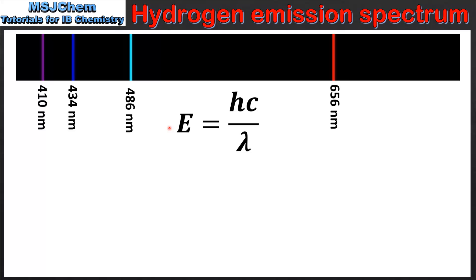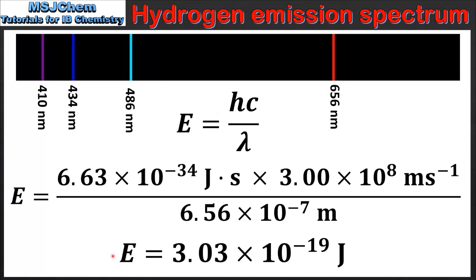Here we look at how to calculate the energy of the photon emitted for each electron transition. To do so we can use this equation: energy is equal to Planck's constant multiplied by the speed of light divided by the wavelength. This gives us a value of 3.03 times 10 to the negative 19 joules, and this is the energy of the photon emitted for the electron transition from n equals 3 to n equals 2.